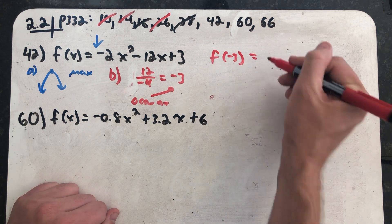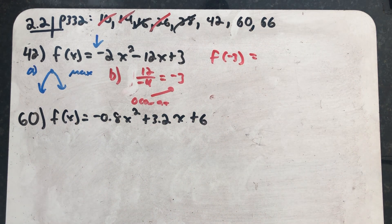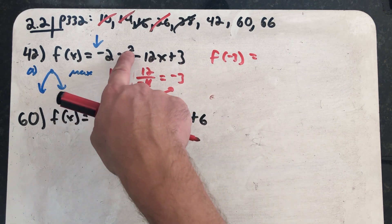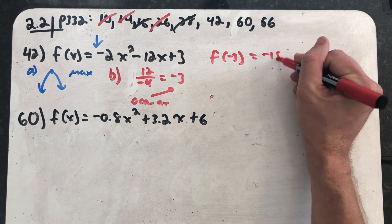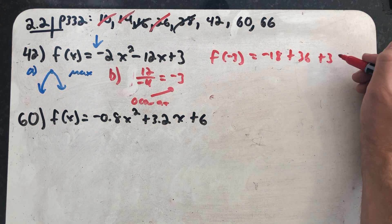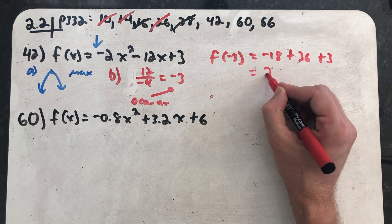f of minus 3. I'm going to need to plug that into the function. Plug in that minus 3. I'll get 9 times minus 2 is minus 18, plus 36, plus 3, and end up with 21.